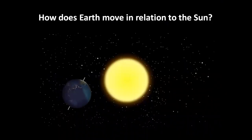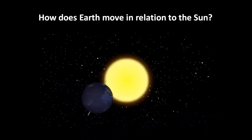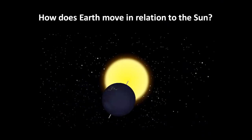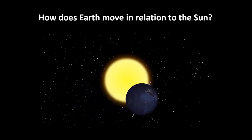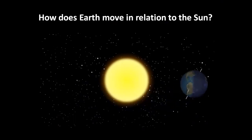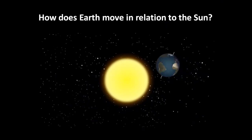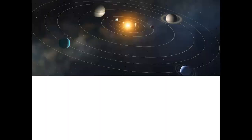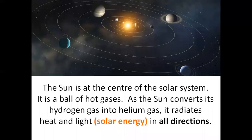How does the Earth move in relation to the Sun? The Sun is at the center of the Solar System. It is a ball of hot gases. As the Sun converts its hydrogen gas into helium gas, it radiates heat and light, solar energy, in all directions.